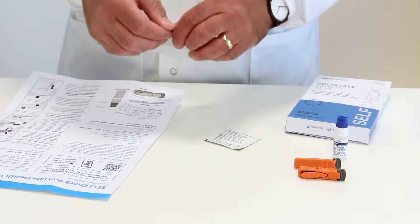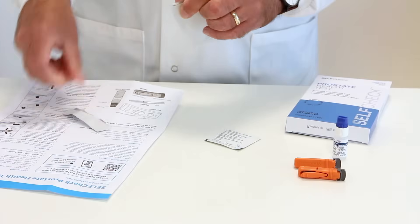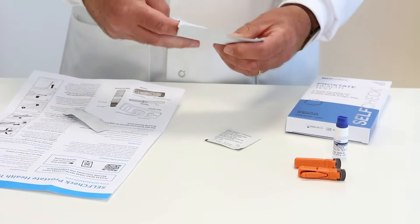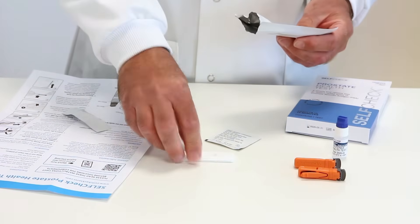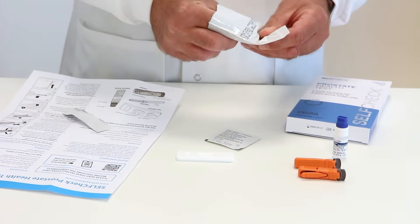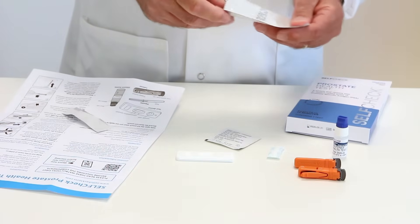Now, open the foil pouch. Inside the foil pouch, you will find the test cassette, a small sachet of desiccant which you can discard, and a small plastic pipette.